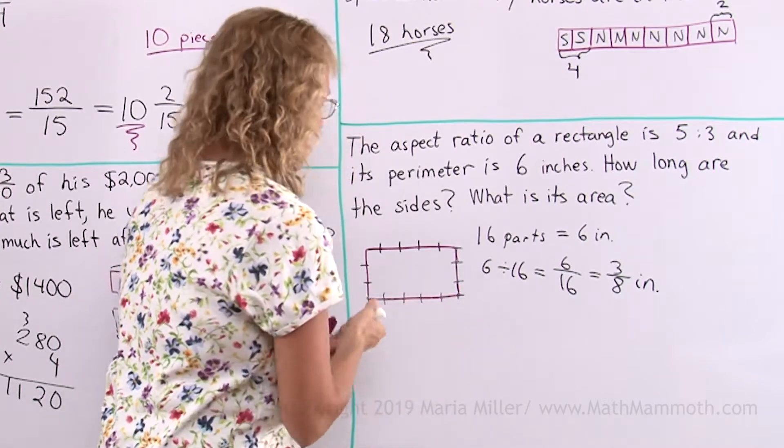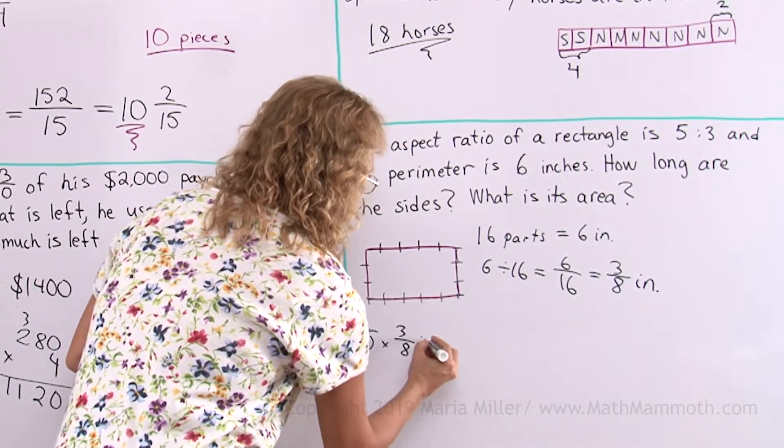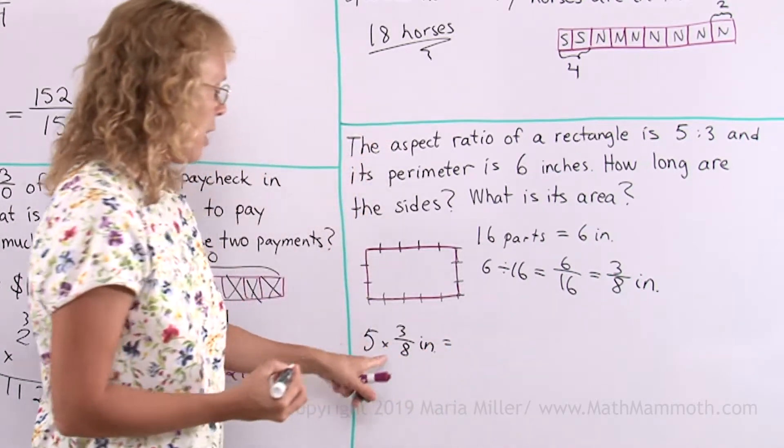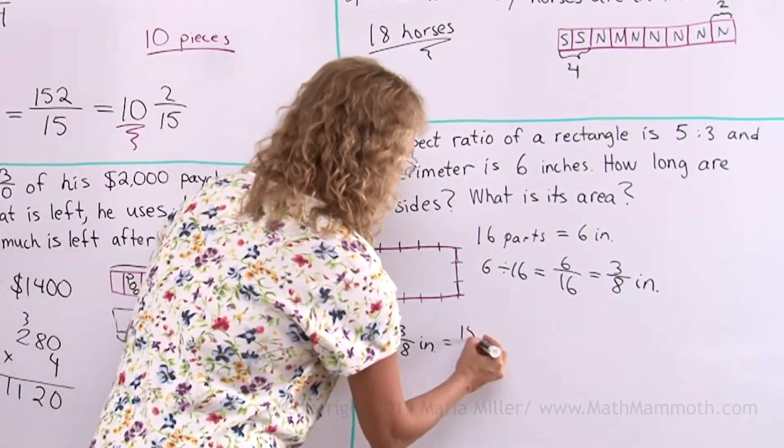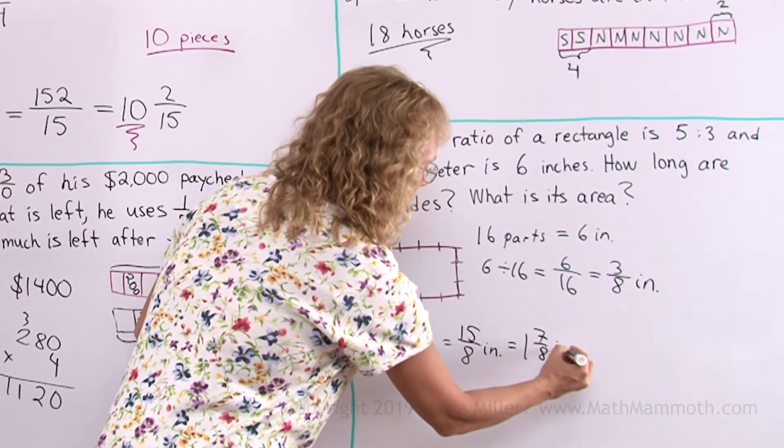Now I need to multiply 5 times 3 eighths of an inch. 5 times 3 is 15, and then over 8. And that is 1 and 7 eighths of an inch.